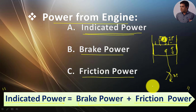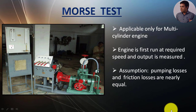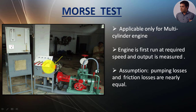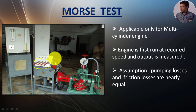We need to understand this phenomenon because the Morse test is completely based on it. The Morse test is used to estimate the friction power. In the figure shown on the left-hand side of this slide, this is the IC engine test rig on which the Morse test can be performed. Here is the engine coupled with a dynamometer, which allows us to measure the brake power. These four levers are for the cutoff — for a petrol engine we cut off power to the spark plug, and for a diesel engine we cut off the fuel supply to each fuel injector. This is the complete laboratory test setup for the Morse test.